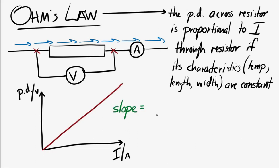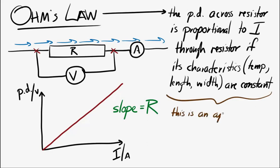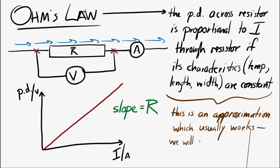The slope of that line — the change in potential difference divided by the change in current — should be the resistance. The sad thing is, Ohm's Law is an approximation. Usually it is a very good approximation, and it is better in some situations than others. That's why we use it, but you have to keep in mind that it doesn't always work perfectly.